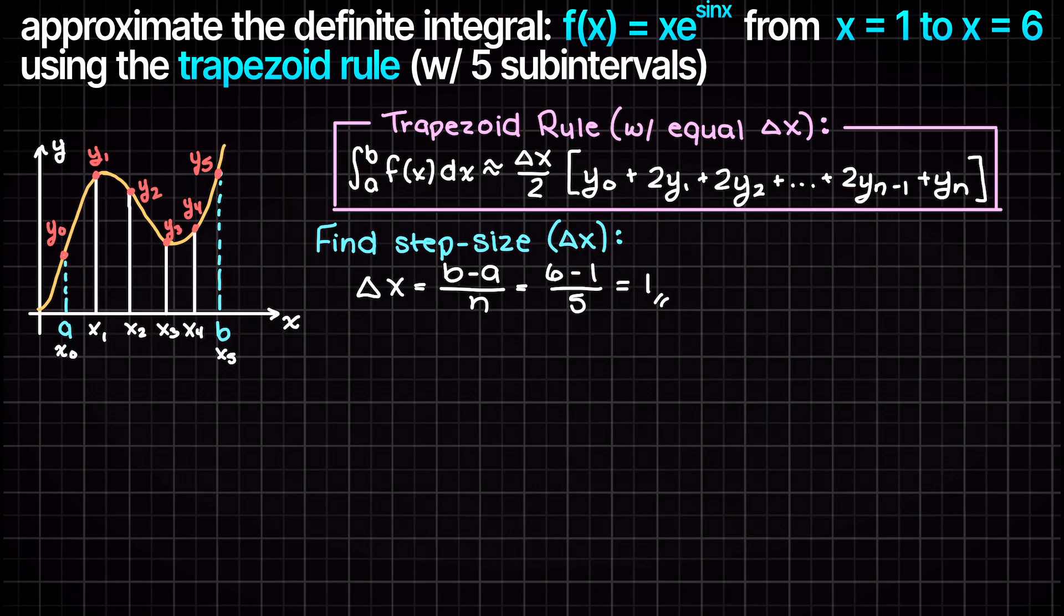You'll see that with the trapezoid rule we have a coefficient pattern of 1 on our first and last terms, and all interior terms have coefficients of 2. Check out the theory video in the description down below for more information on why this pattern exists if you're curious.